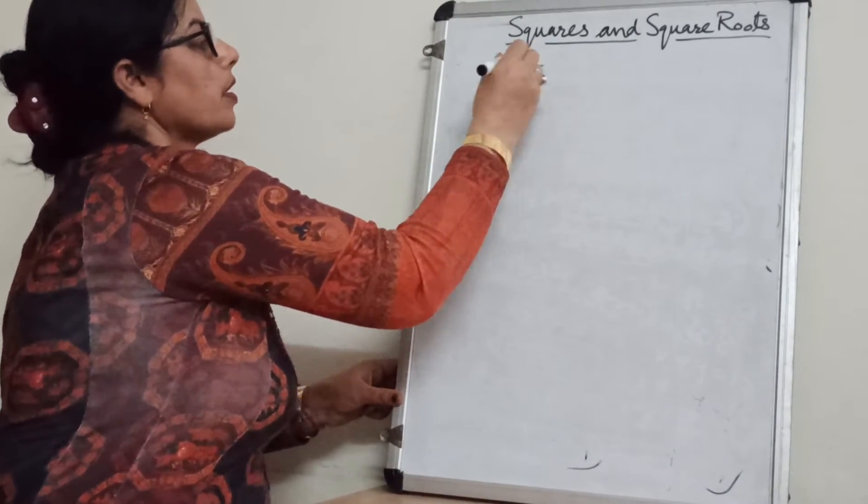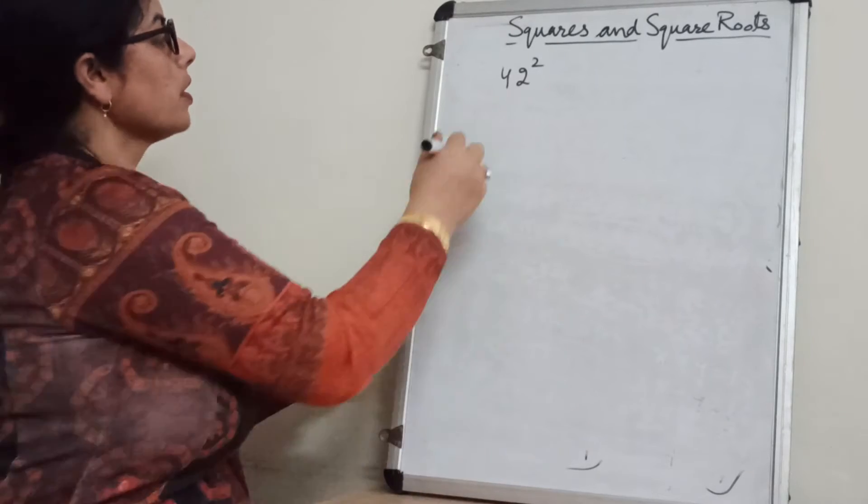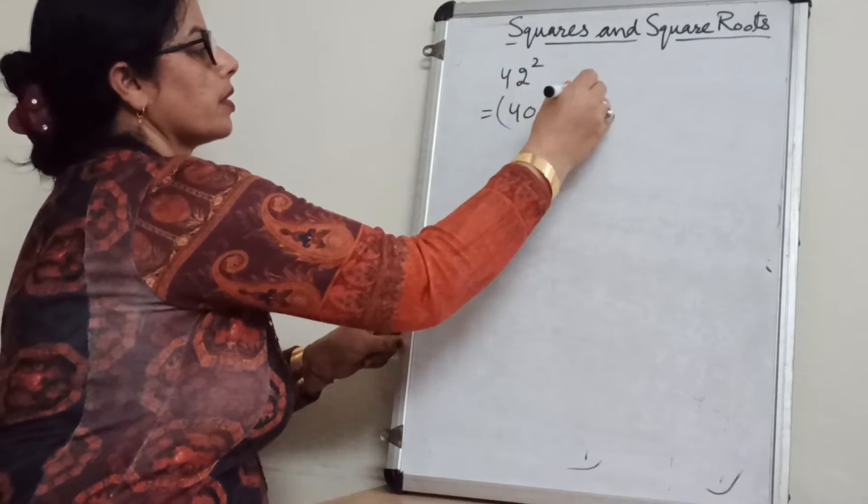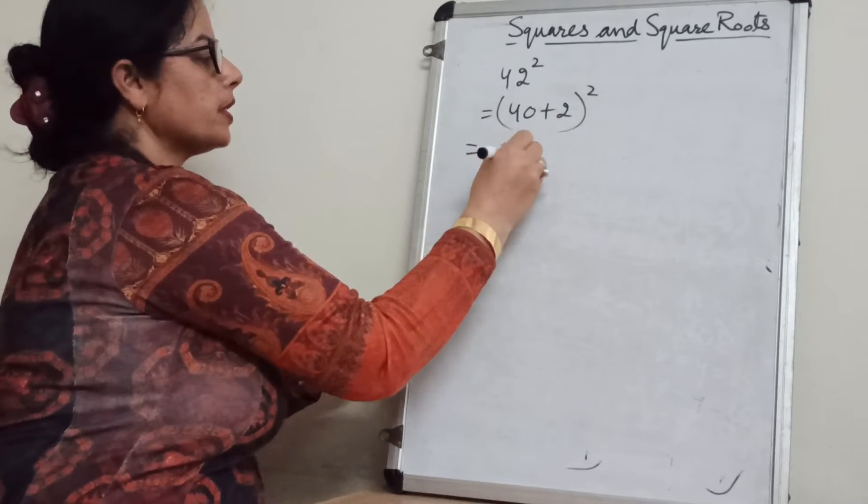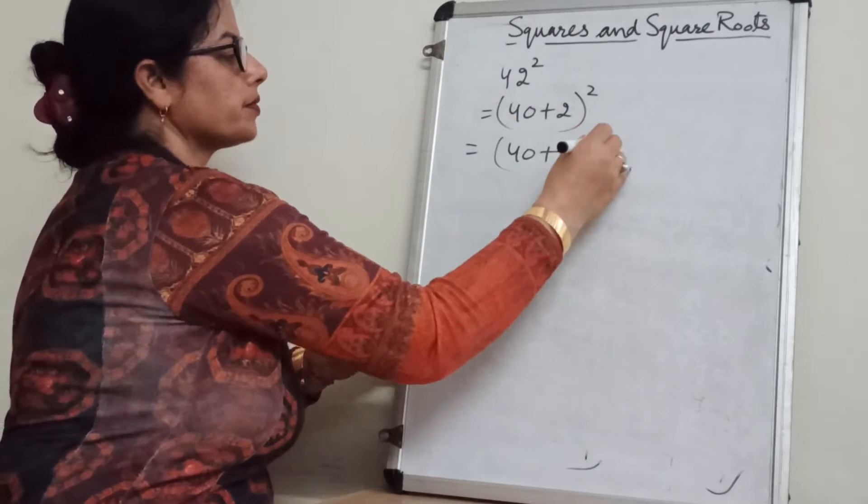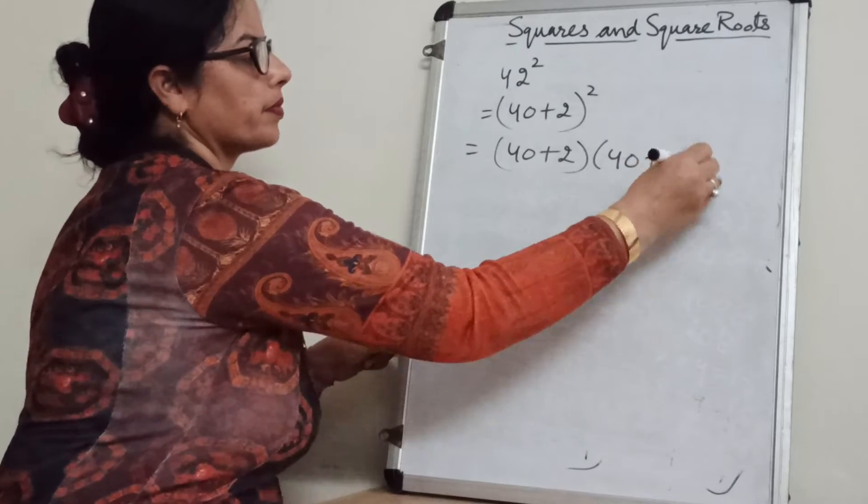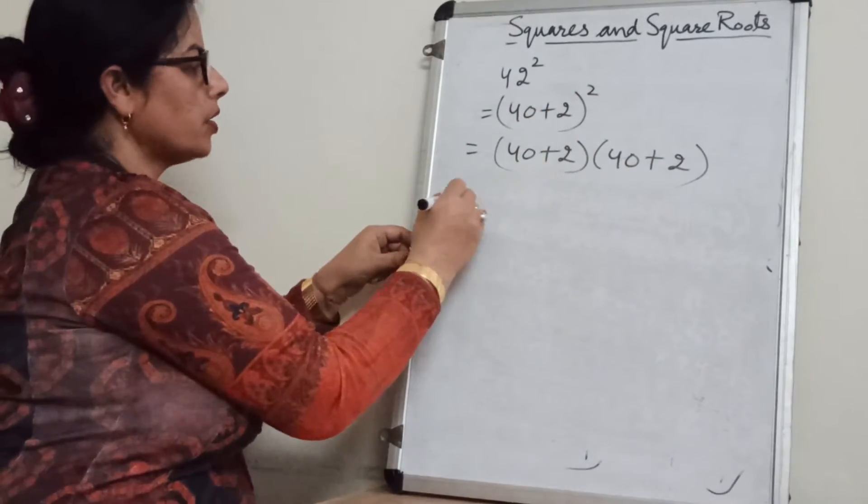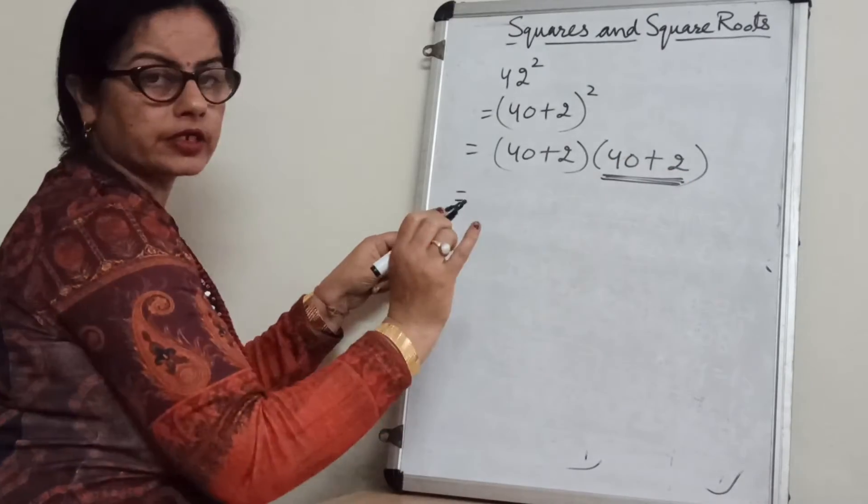42 square. How we can do this? 42, how we can break? 40 plus 2. And then 40 plus 2 we will write 2 times. Because power is 2 we have written 2 times.